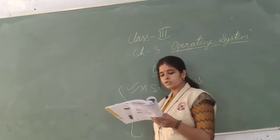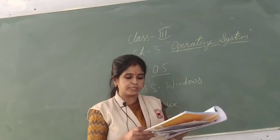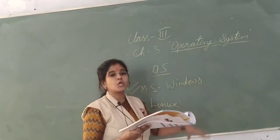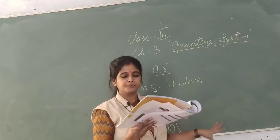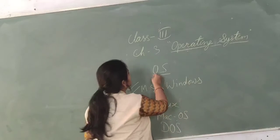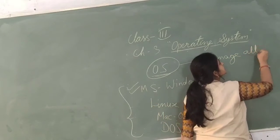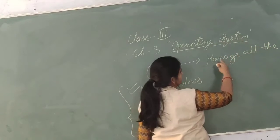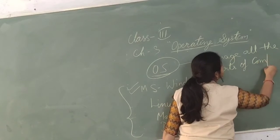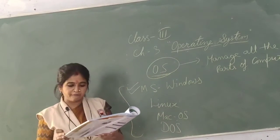Why do we need an operating system? A computer has various parts and they cannot function properly without software to control them. There is a need for special software to manage all the hardware and software of our system. The operating system is the main software that manages all computer parts and other software — it manages all parts of the computer, whether they are physical or software.